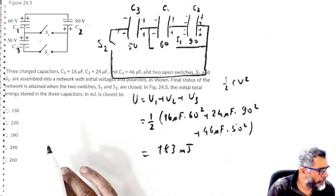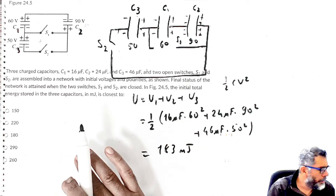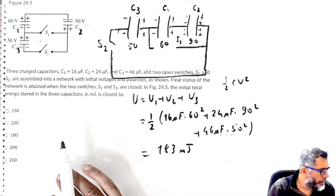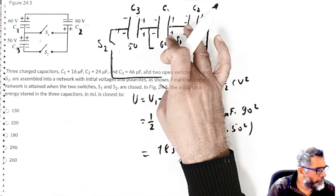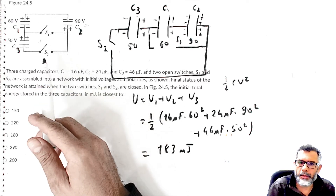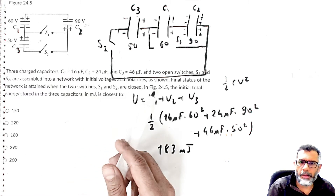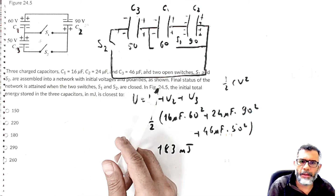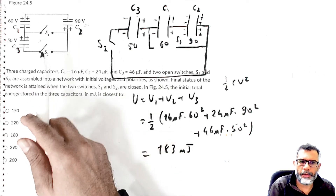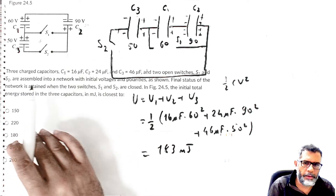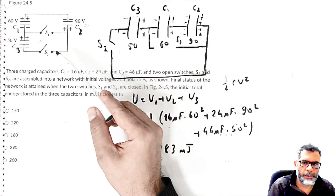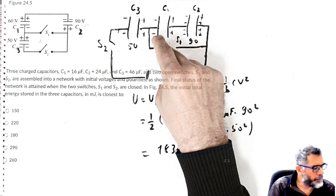So the problem is resolved — we had discussed this in class. The problem text is somewhat confusing because it mentions the final status when switches are closed, but then asks for the initial energy when switches are open. We have just calculated the first energy before closing the switches. Now, what happens if you close the switches?